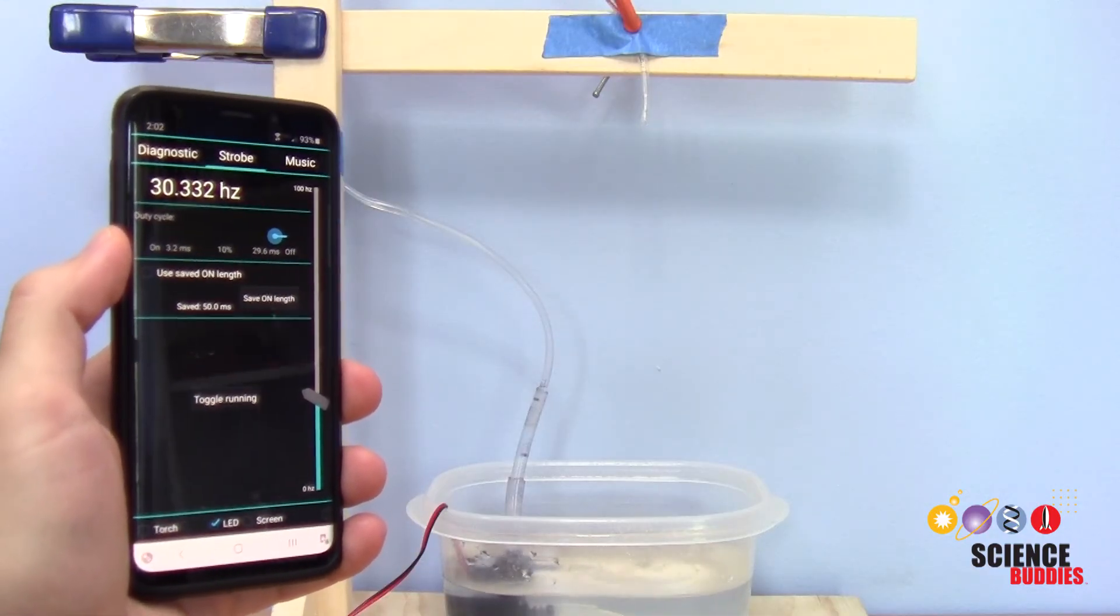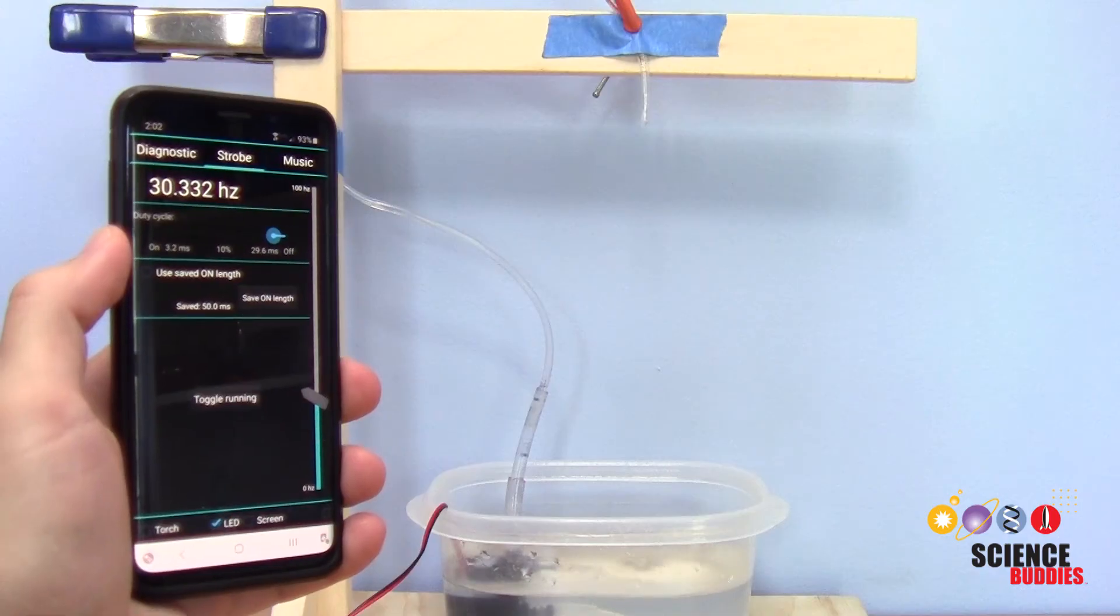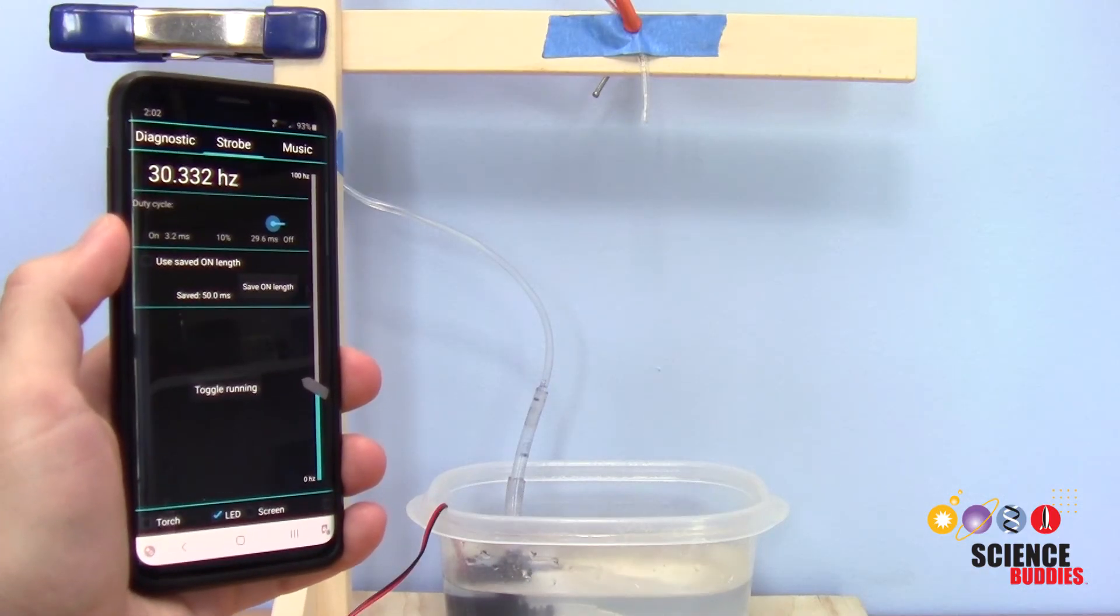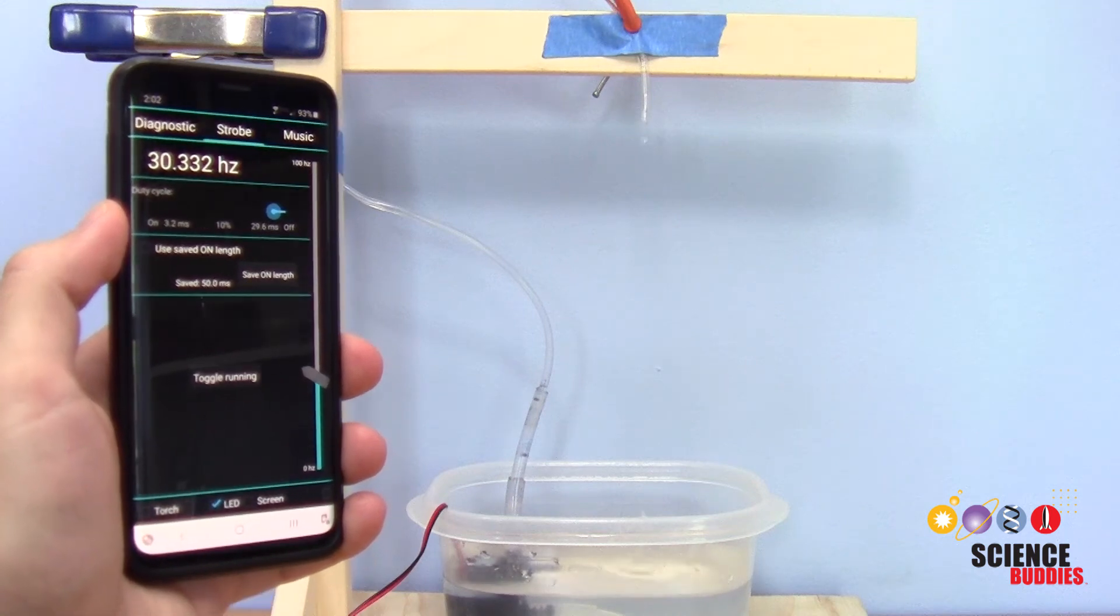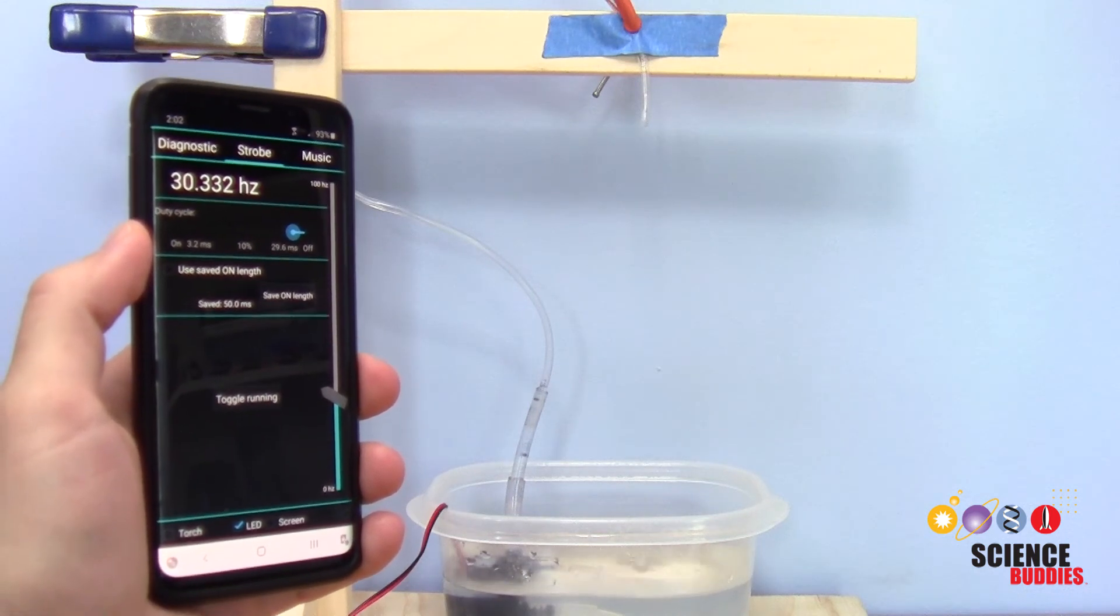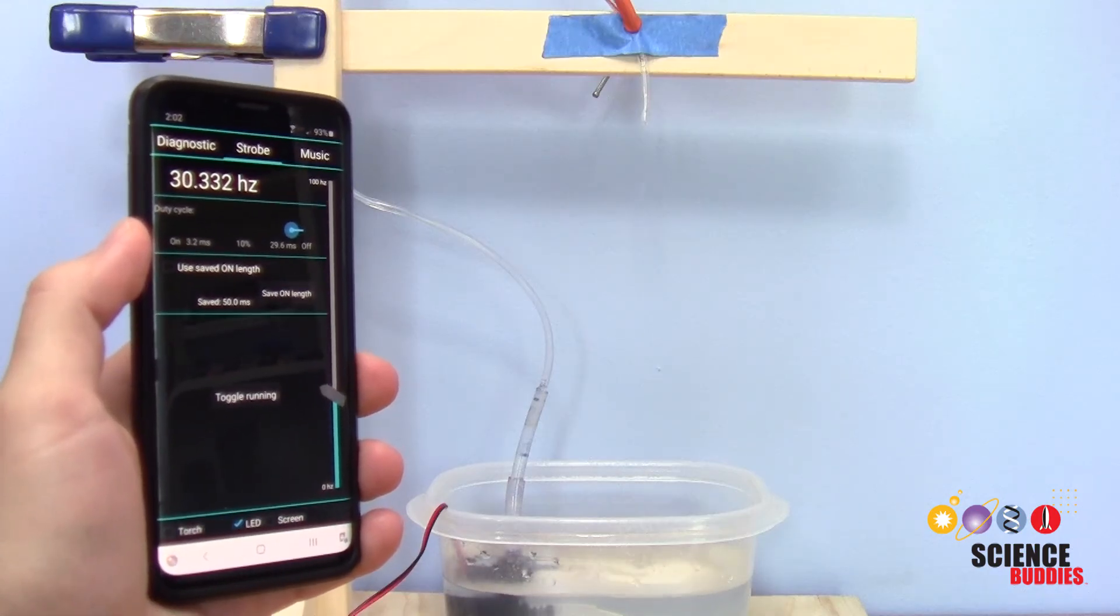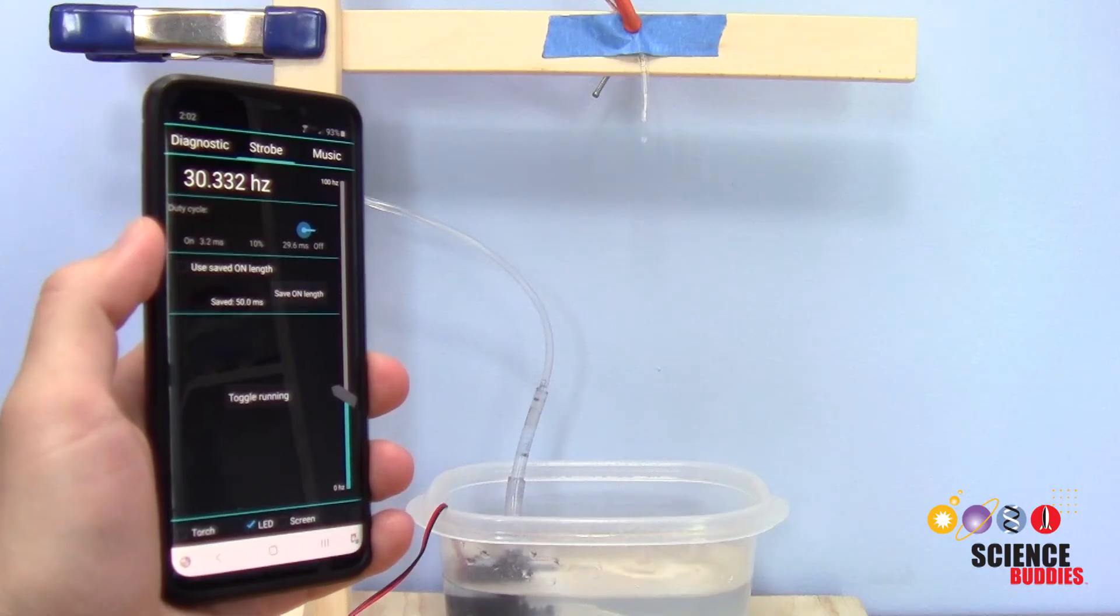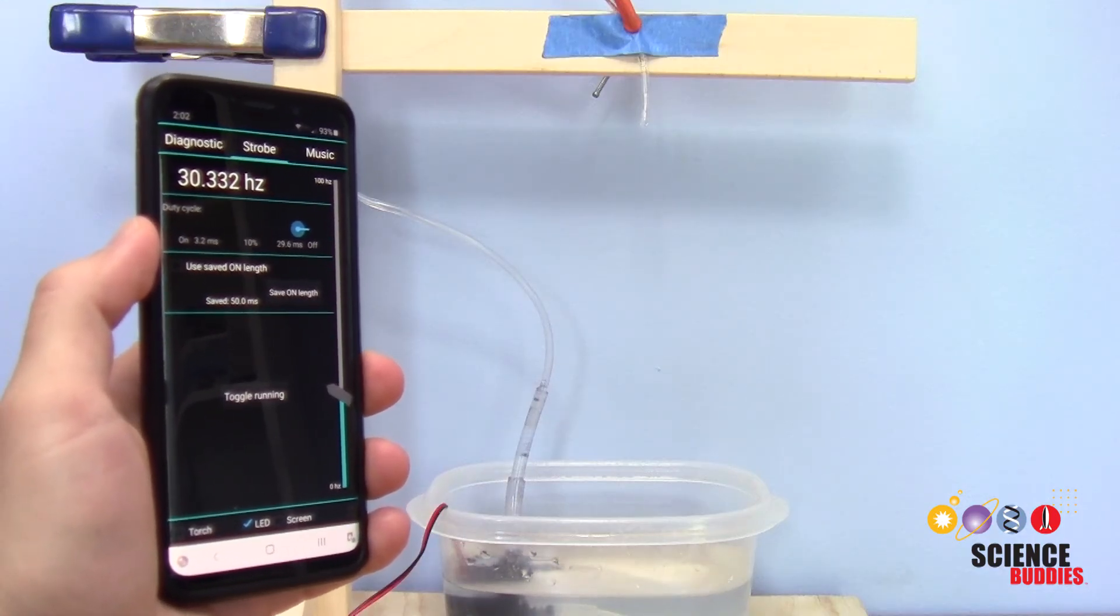The frequency that works best will depend on your exact setup, but we've found that starting somewhere around 30 hertz and then working your way up works well. You'll also want a very low duty cycle, say somewhere around 10%, because that way the water drops will only be illuminated very briefly. If the duty cycle is longer, then the light is on for too long and the drops start to look blurry.